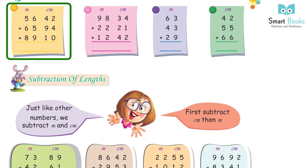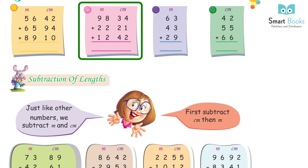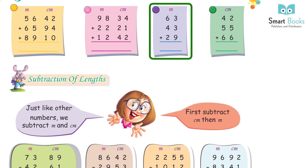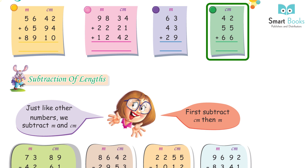56 m 42 cm + 166 cm. 65 m 94 cm + 89 m 10 cm = 211 m 46 cm. 98 m 34 cm + 22 m 21 cm + 12 m 42 cm = 132 m 97 cm. 63 m + 43 m + 29 m = 135 m.